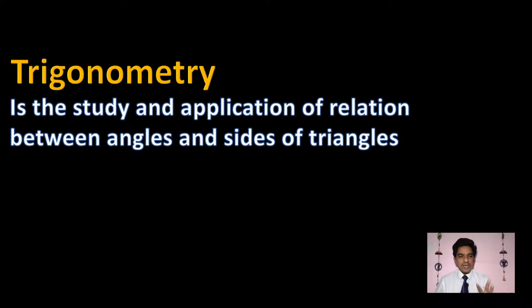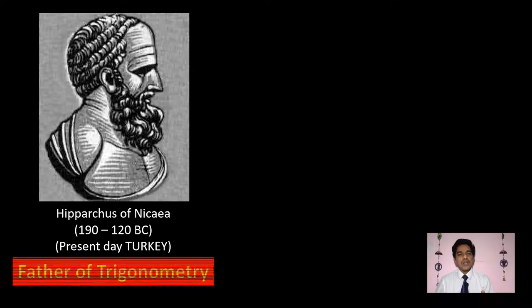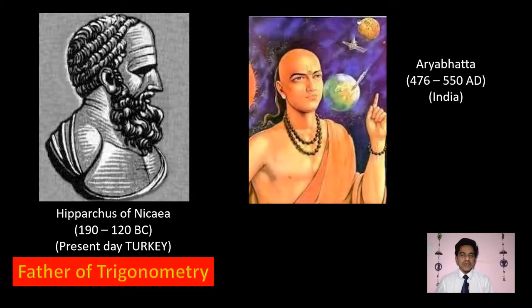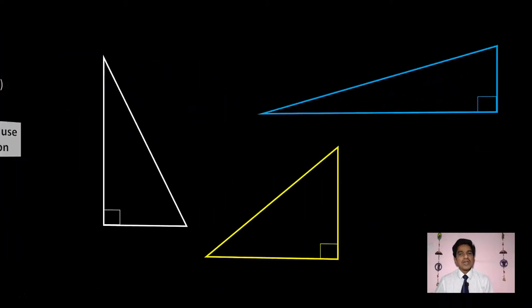Trigonometry basically deals with triangles. The person who developed it was Hipparchus, who lived from 190 to 120 BC, from present-day Turkey and Greece. He is called the father of trigonometry, and the concepts of trigonometry were first used during that time. In India too, ancient scholars did significant work in trigonometry. Hipparchus was a famous astronomer who first defined the six trigonometric ratios including the sine function.